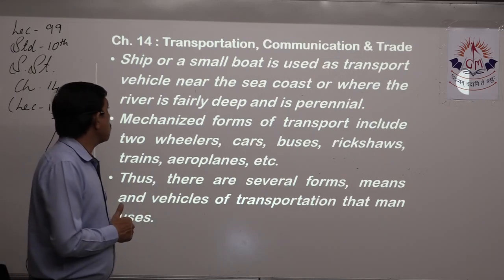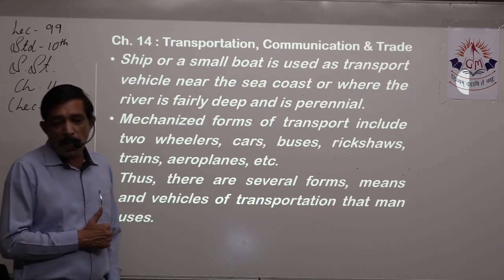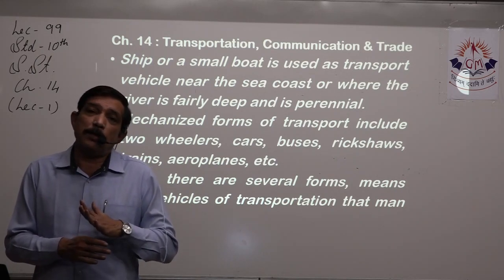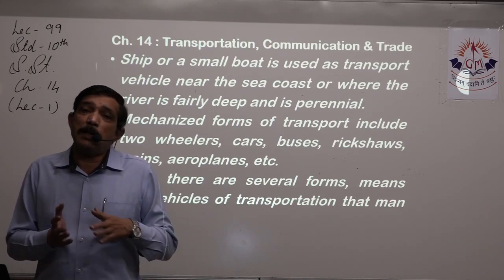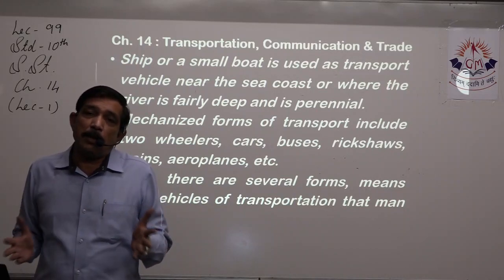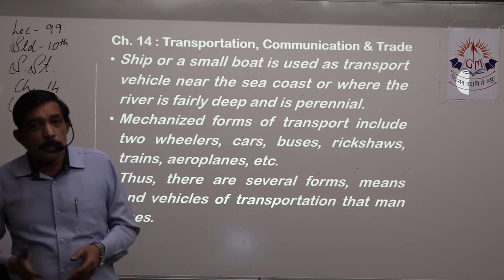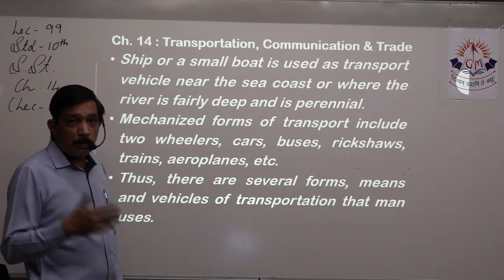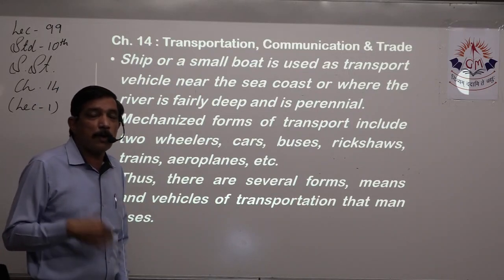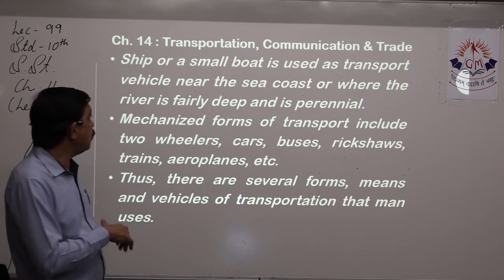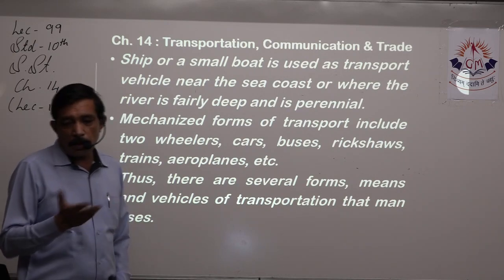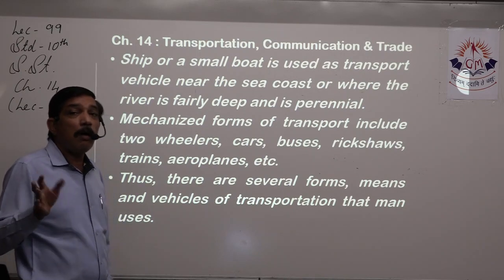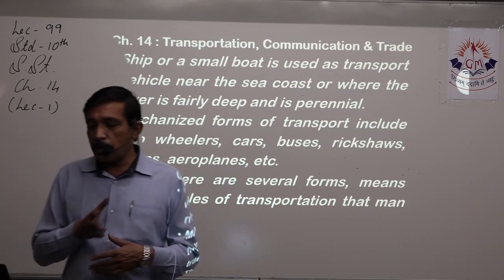A ship or a small boat is used as a transport vehicle near the sea coast or where a river is fairly deep. Most rivers coming out of the Himalayas are perennial — they have water 365 days a year and are quite deep — so small ships or boats can ply in those rivers, carrying lots of load. Water transport is called one of the cheapest means of transport. Mechanized forms of transport include two-wheelers, cars (four-wheelers), buses, rickshaws (three-wheelers), trains, aeroplanes, and more — all run on machines.